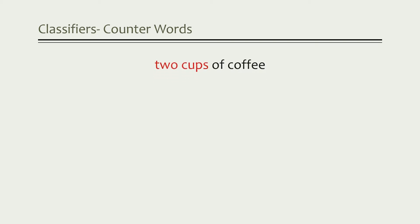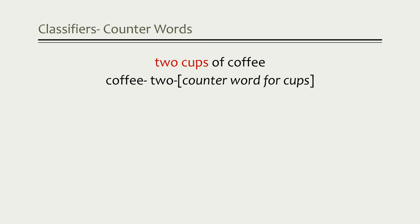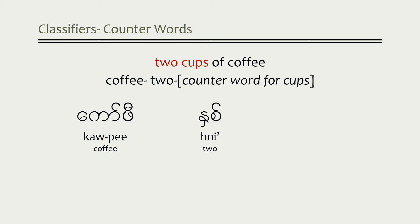To begin with, let's look at this phrase: two cups of coffee. Now in Myanmar we're going to switch the word order around a little bit. Coffee is what we're going to call the root noun — it's what we're talking about. And two cups represents how much. So the order is going to be: coffee, two, and then a counter word used for counting cups of coffee. The word for coffee is 'coffee', the word for two is 'ne', and the counter word for cup is 'quet'.